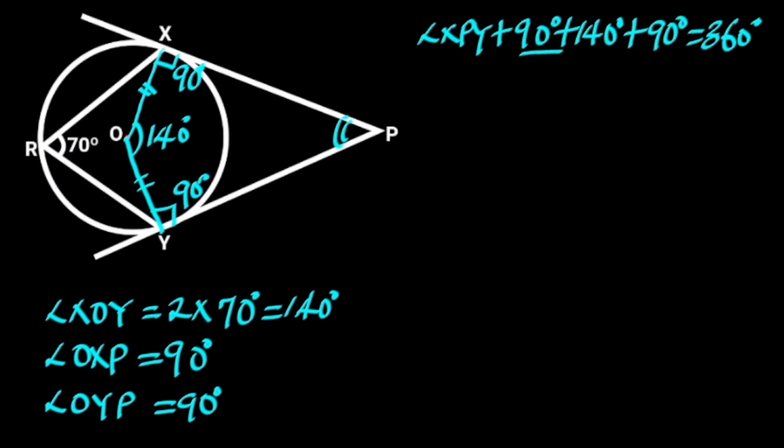90 degrees plus 140 degrees plus 90 degrees equals 320 degrees. So angle XPY plus 320 degrees equals 360 degrees. Next, we take 320 degrees to the right side. Since 320 degrees is positive on the left, it becomes negative when moved to the right.